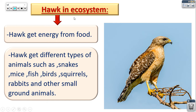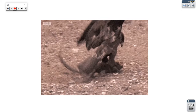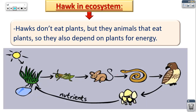Any living organism takes its energy from food. The hawk can eat or get different types of food like mice, fish, birds, squirrels, rabbits, and other small ground animals. As you can see in this picture, the hawk does not eat plants — it eats animals.